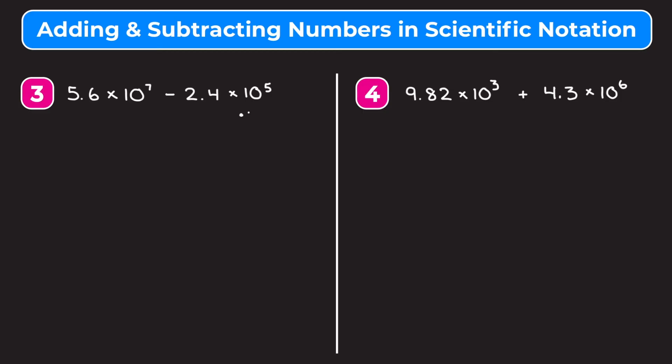To change 10 to the fifth into 10 to the seventh, I have to multiply by 10 to the second — I have to multiply by 10 two more times. In order to keep the original number the same, that means I have to divide 2.4 by 10 to the second. So I need to multiply 10 to the fifth by 10 squared, and divide the 2.4 by 10 squared.